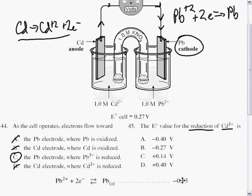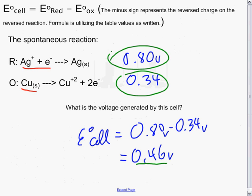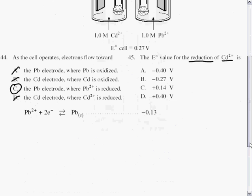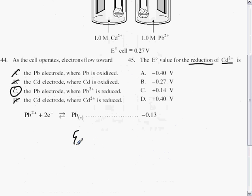So we have this half reaction from the table of standard potentials. We also have previously this reaction. E° of the cell is the E° of the reduction minus the E° of the oxidation.